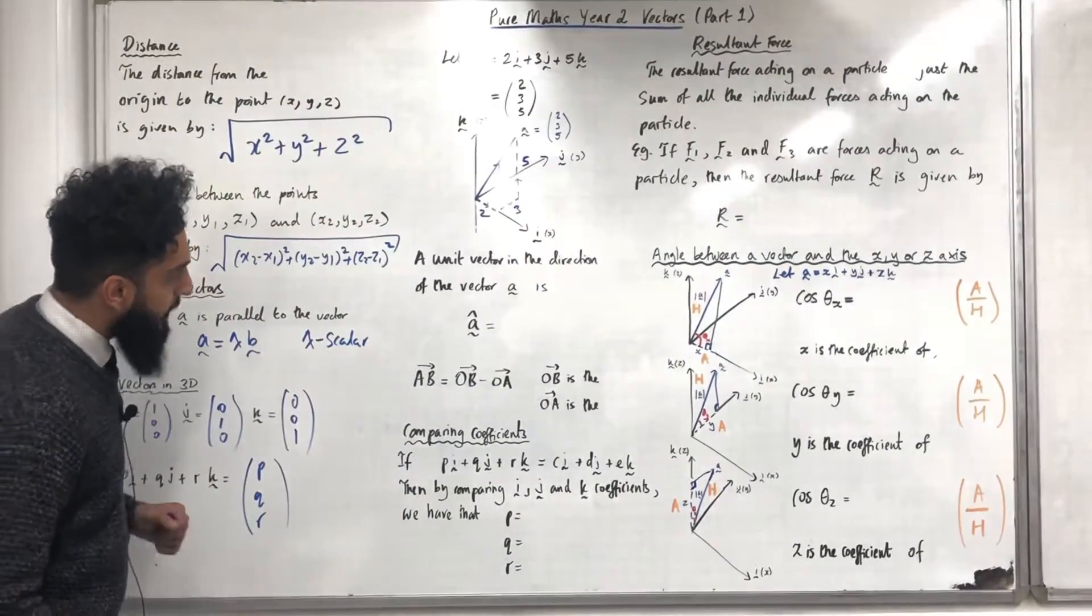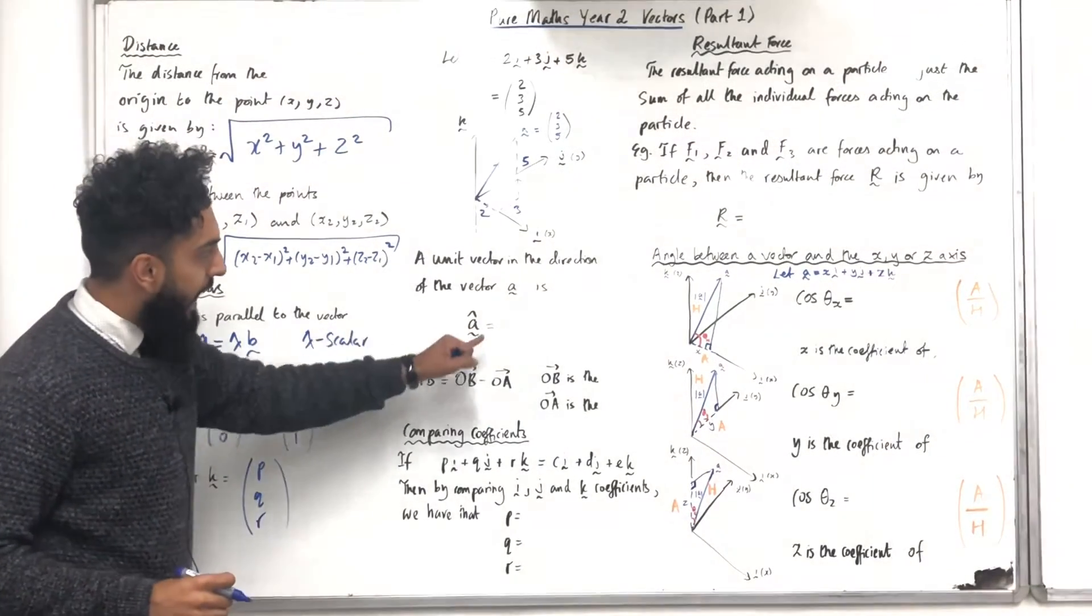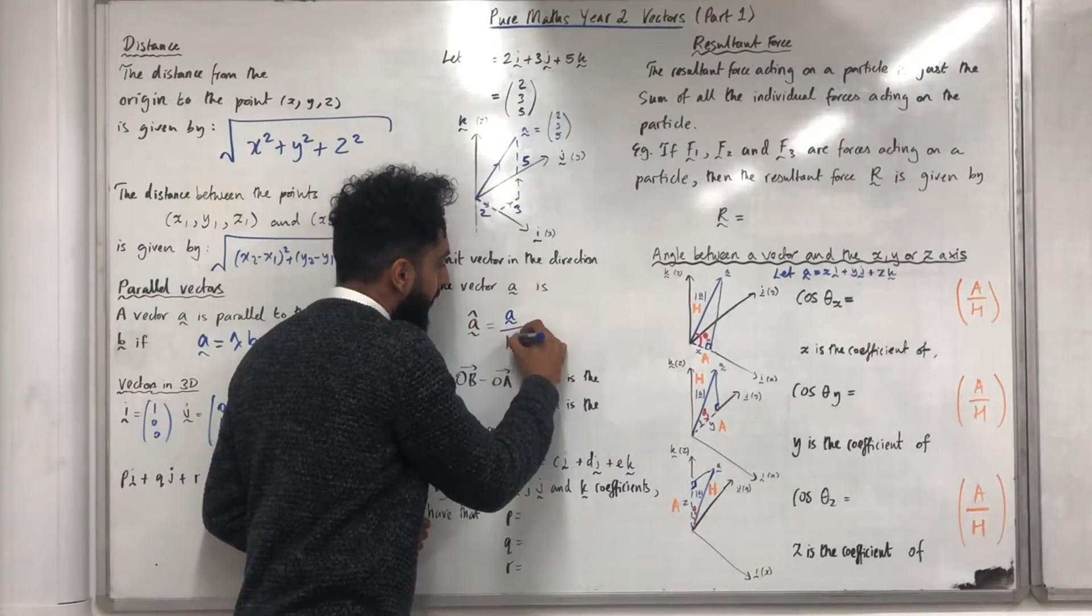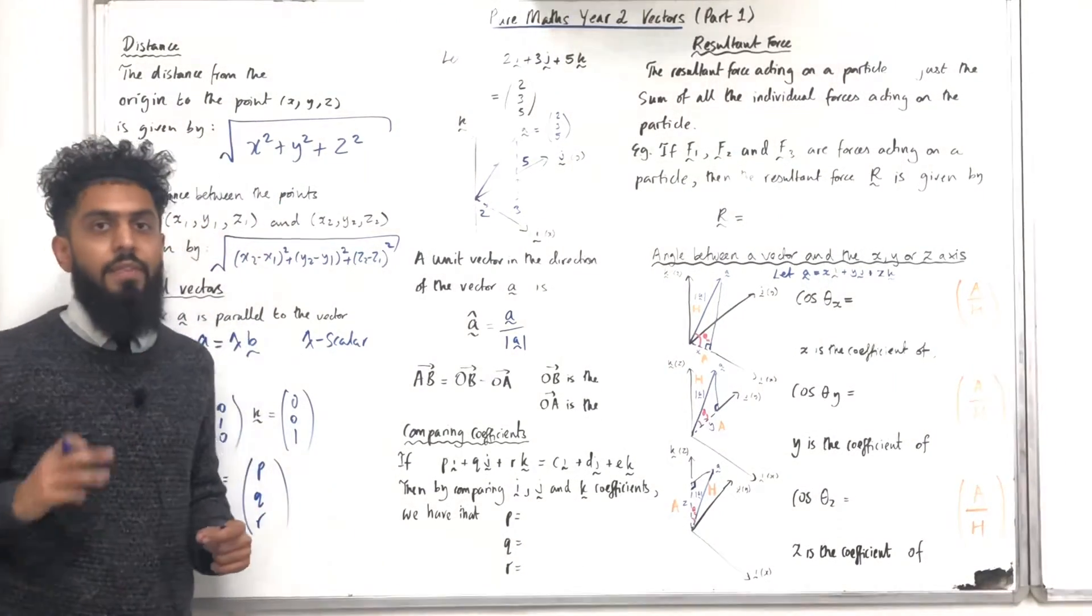A unit vector in the direction of the vector a is just the vector a hat. It is given by the vector a itself divided by the magnitude of the vector a. In other words, the modulus of the vector a.